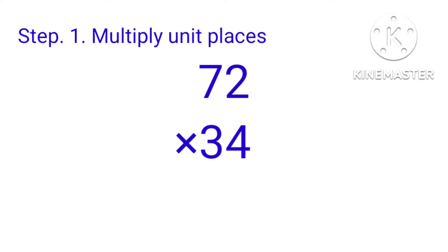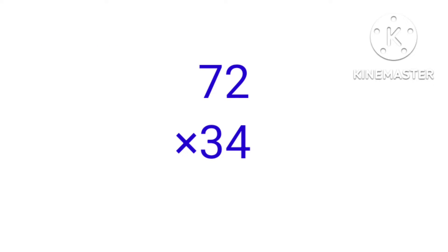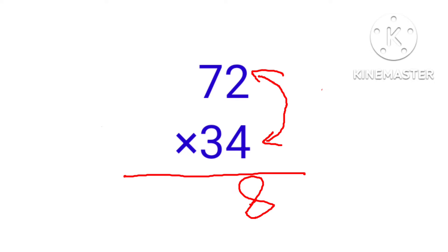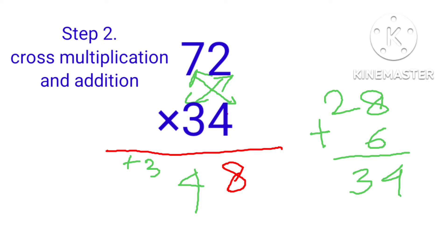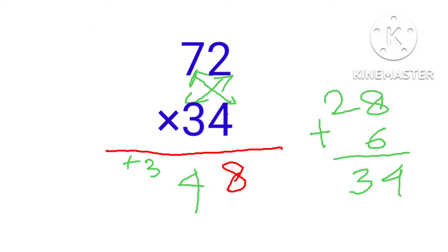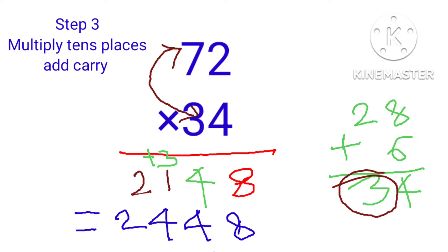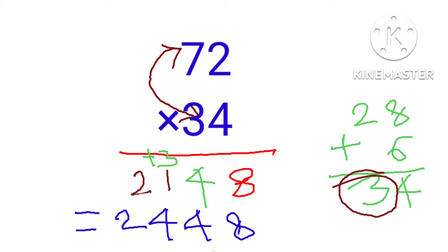For 72 into 34: first multiply the unit places, 4 times 2 equals 8. Now cross multiply: 7 times 4 plus 3 times 2 equals 28 plus 6, and by addition that is 34. So write 4 and carry 3. Now multiply the tens places: 7 times 3 equals 21, plus carry 3 equals 24.